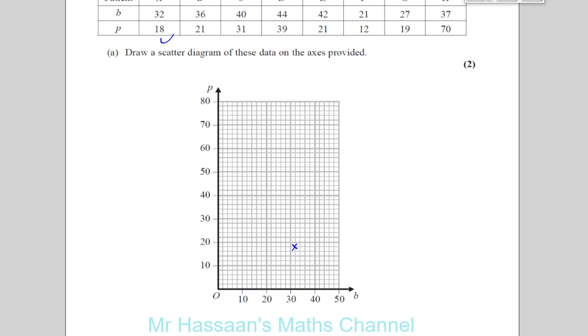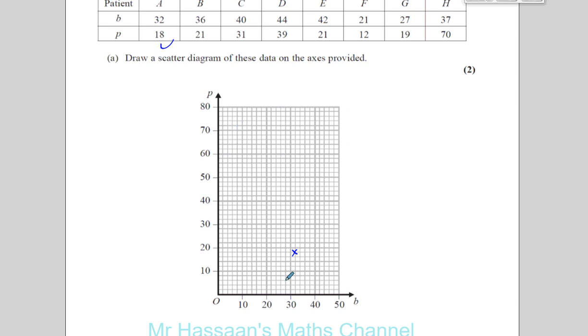Patient B, 36 and 21. So 36, that's three squares along, and 21 is going to be right there, halfway between these two. Then you have 40 and 31, 40 and 31.